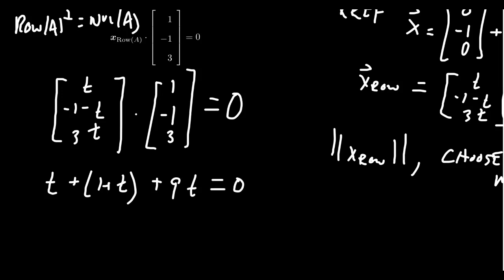And so this will all equal zero. Combining like terms, we get 11T plus one equals zero. Thus, 11T equals negative one, or T equals -1/11. Now this gives us the parameter. This is the parameter for which we should plug into the general solution.